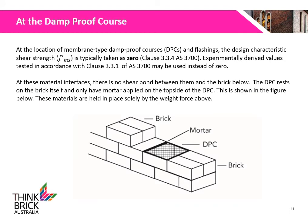At the location of membrane-type damp proof courses and flashings, the design characteristic shear strength F-MS is typically taken as 0. At these material interfaces, there is no shear bond between the DPC and the brick. The DPC rests on the brick itself and only has mortar applied on the top side of the DPC, as shown in the figure below. These materials are held in place solely by the weight force above.